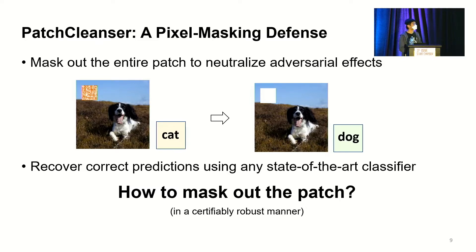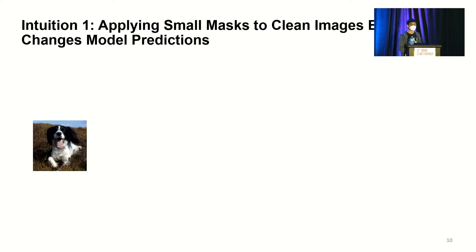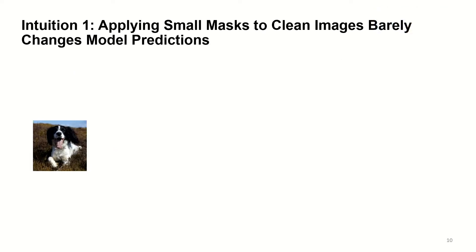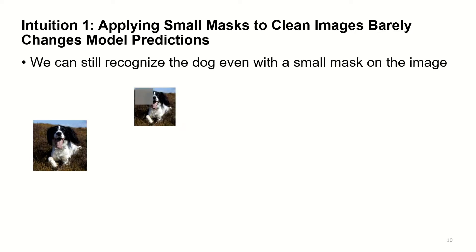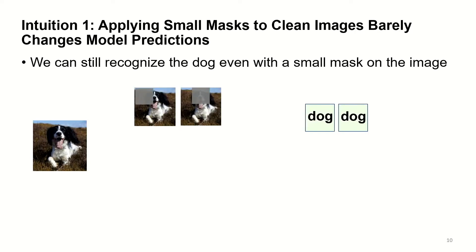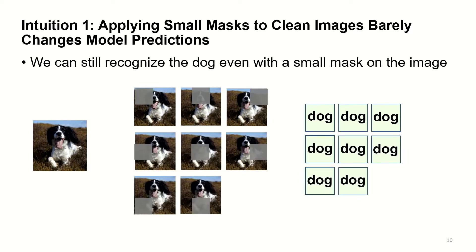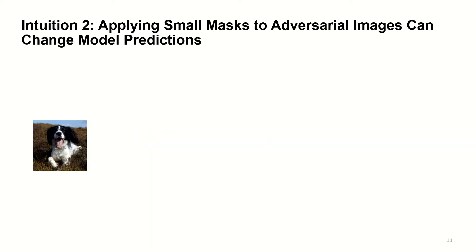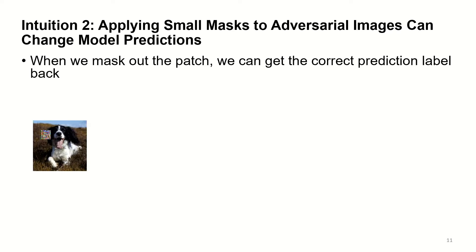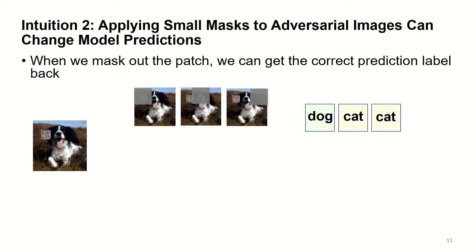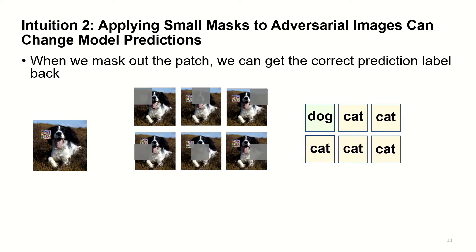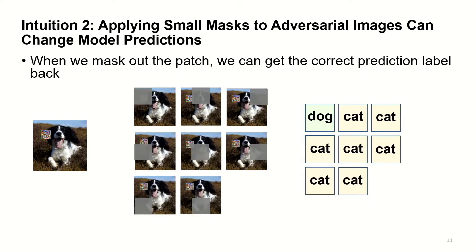Here is some intuition motivating our design. We observe that applying a small mask to a clean image barely changes the model prediction — we can still recognize the dog even with the small mask. On the other hand, when there is an adversarial patch, applying a small mask can change the prediction because masking out the patch recovers the correct label. So applying masks to an adversarial image produces disagreement across different mask predictions.